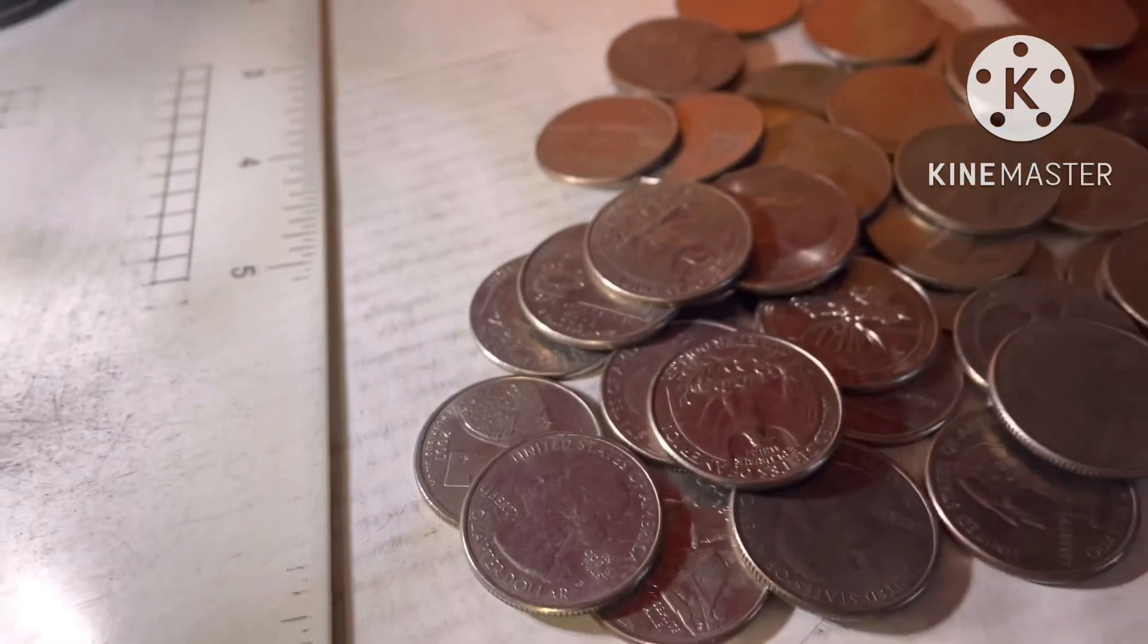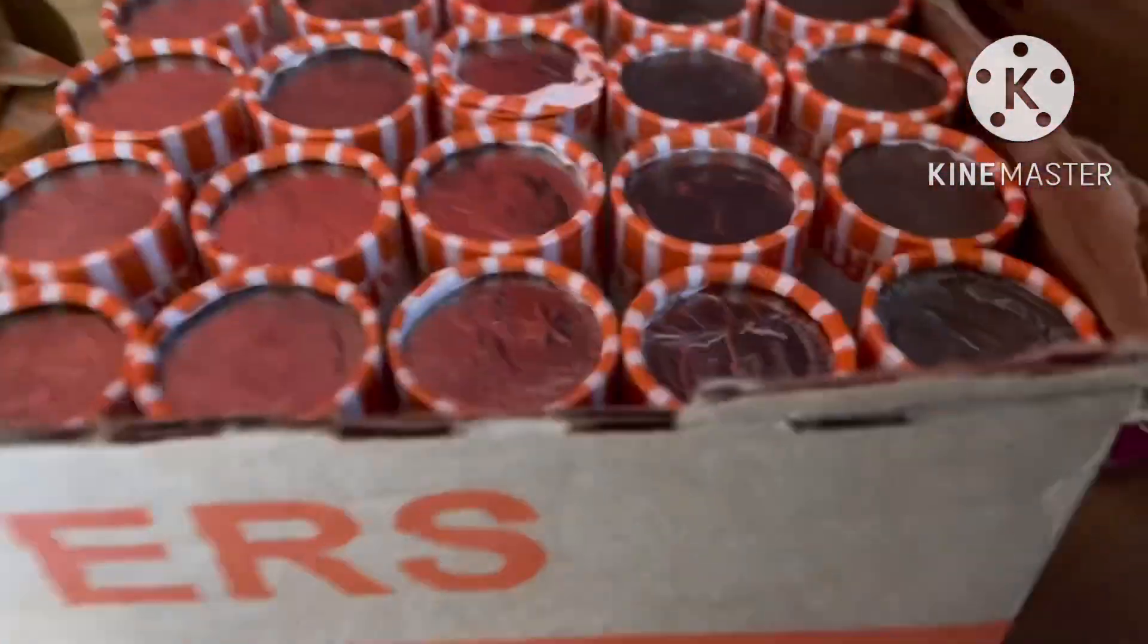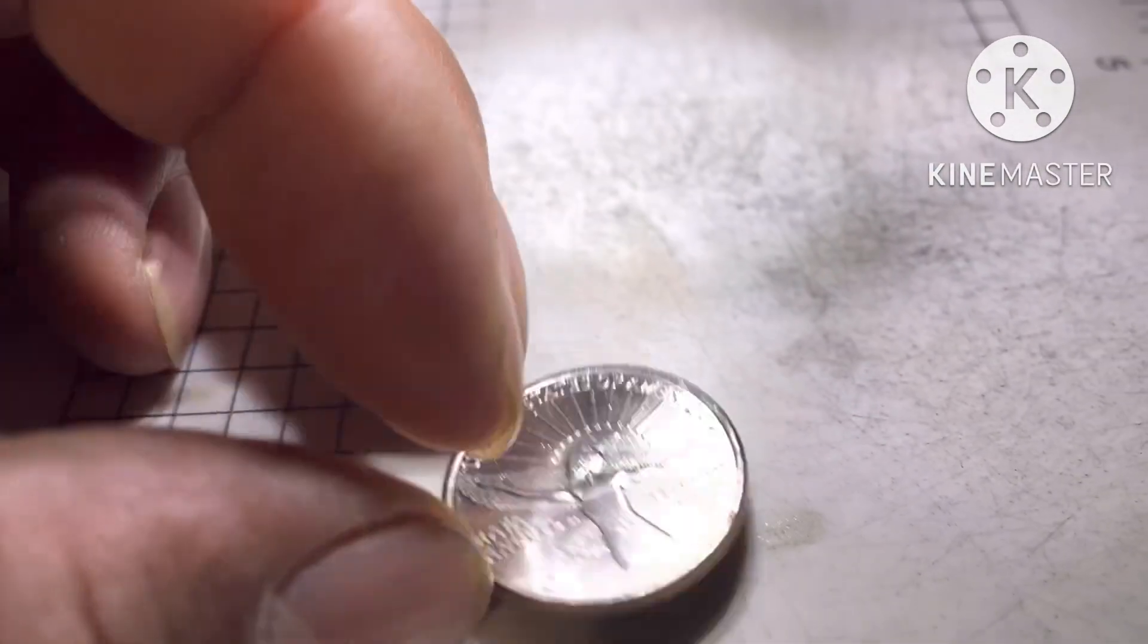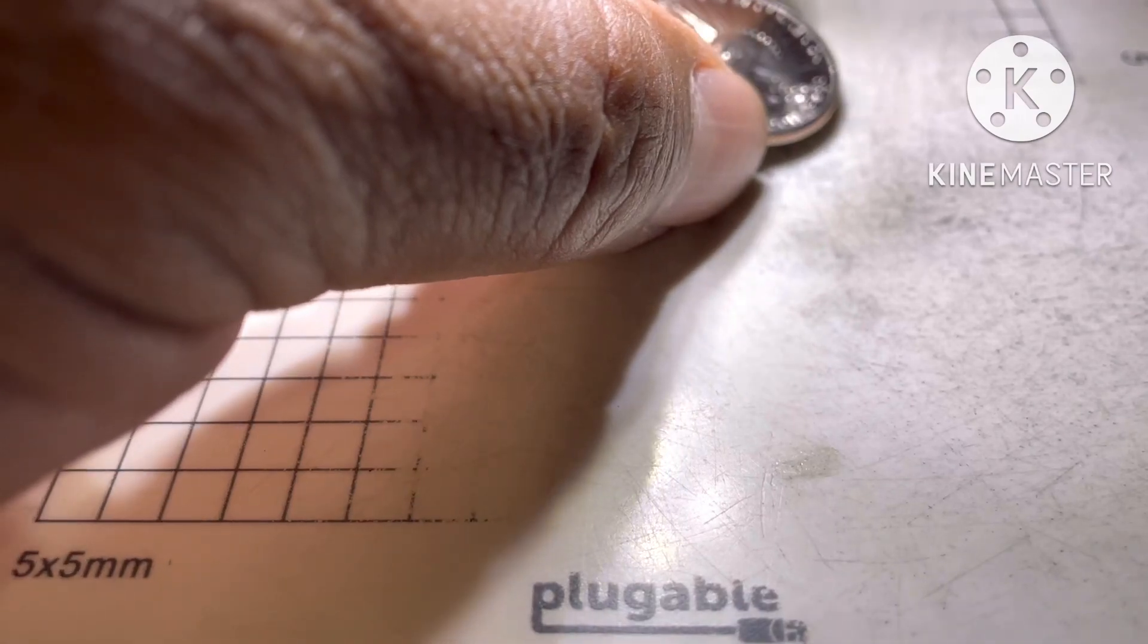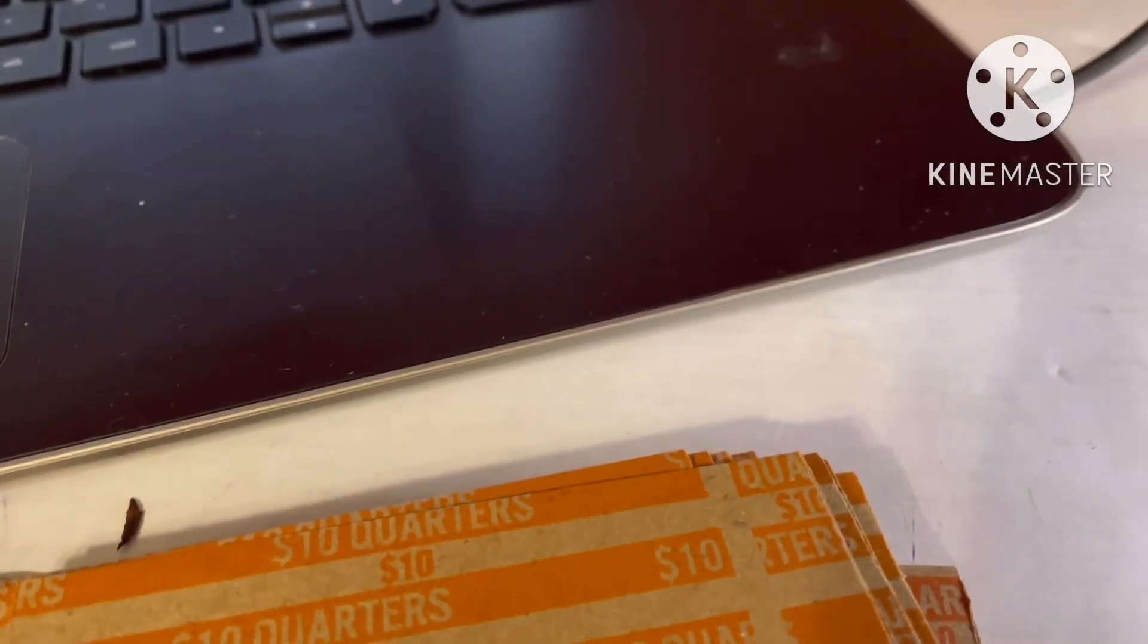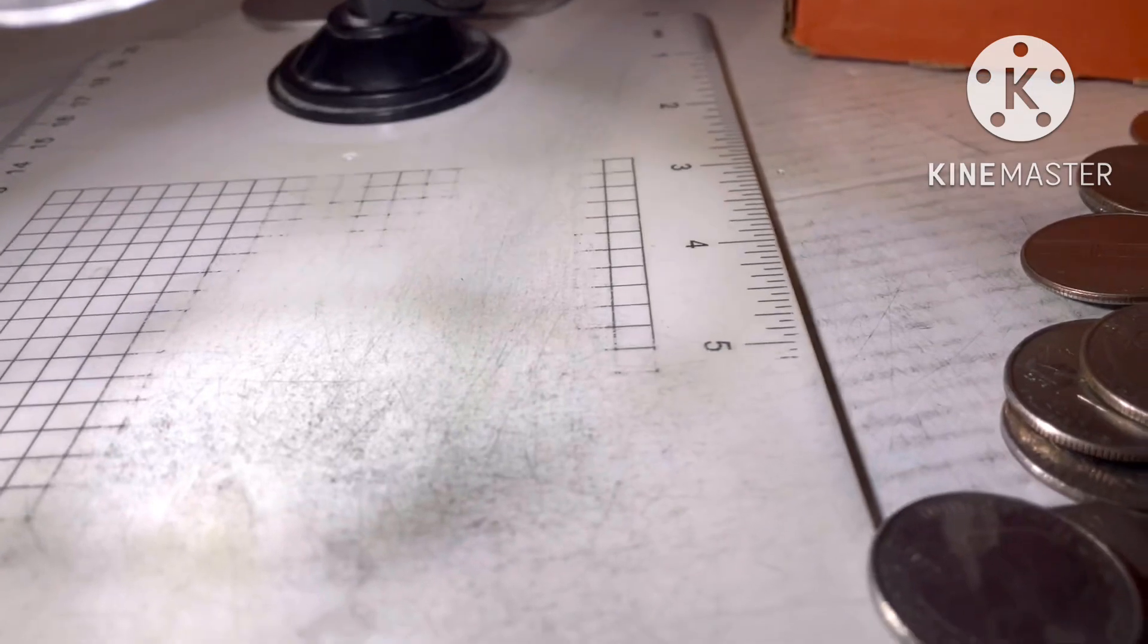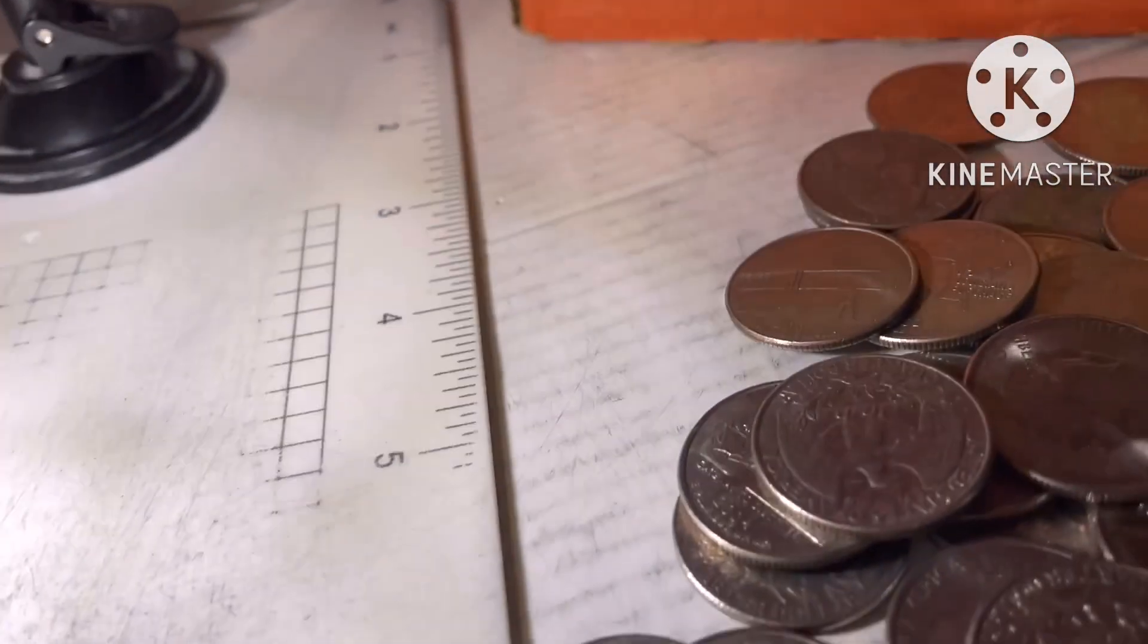All right guys, I got it. Exactly halfway at the point, 25 rolls, and the only thing I find is this 2022. It's got that chip on the mouth. And that's it guys, no silver, no W's. It's just that.